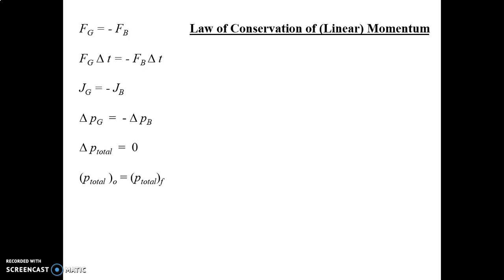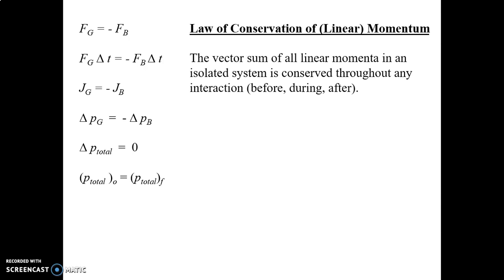This is the law of conservation of linear momentum. Again, I put linear in parentheses. It's usually just the law of conservation of momentum. Now how is this law stated? It says the vector sum of all linear momenta in an isolated system is conserved throughout any interaction. Meaning before the interaction, during the interaction, and after the interaction.